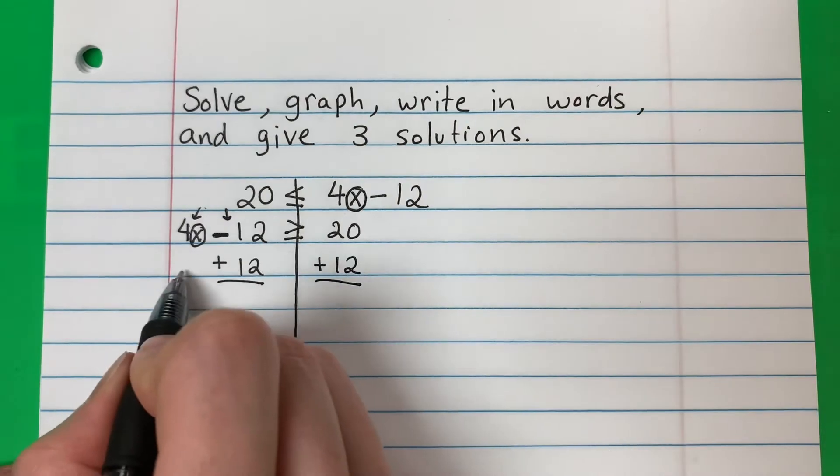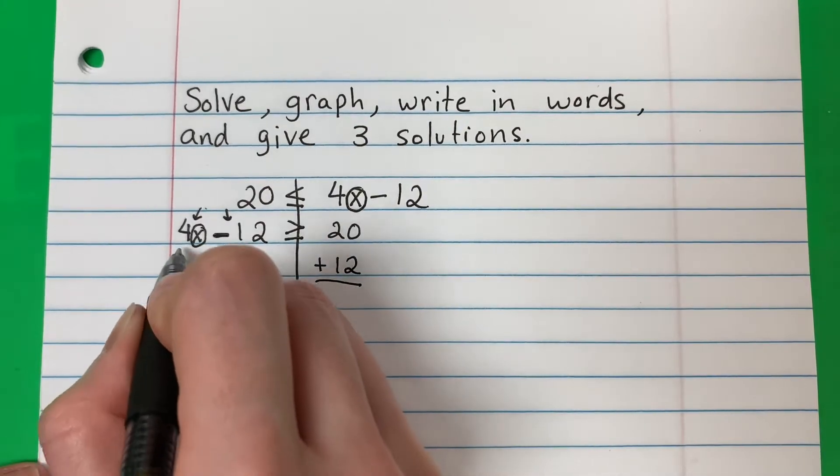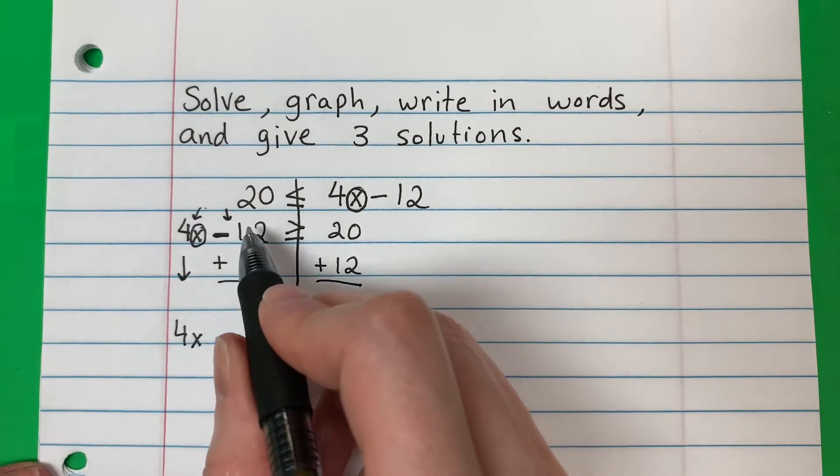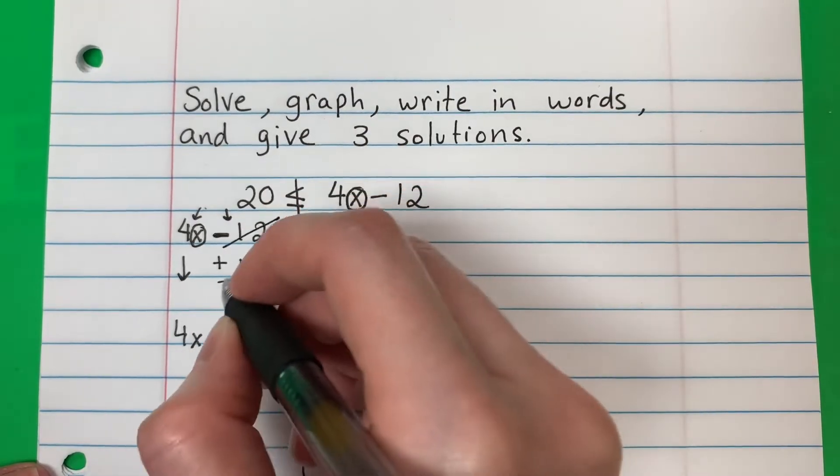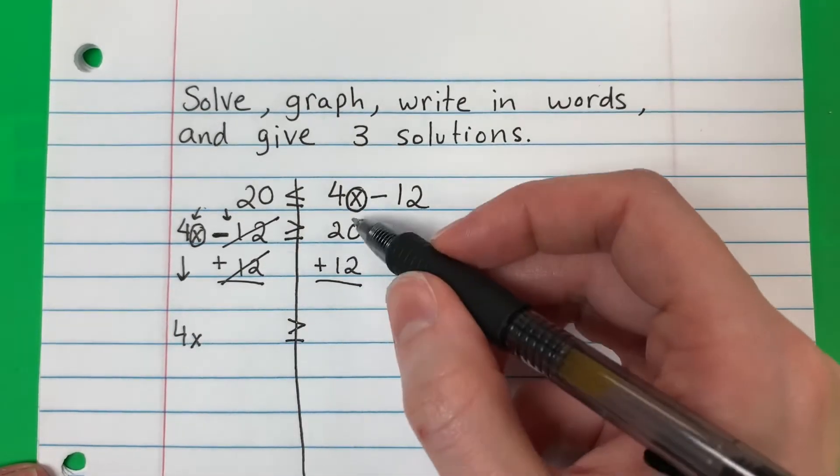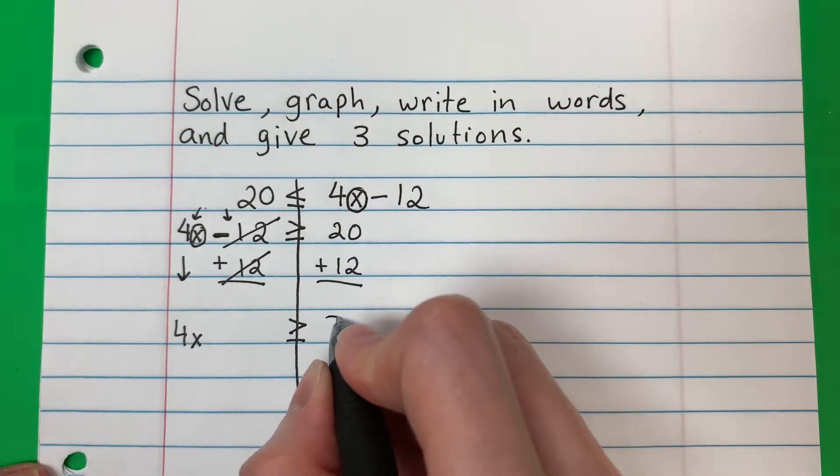Okay, here there's nothing, so I will copy down 4X. Negative 12 plus 12 is 0. Cancel, 0. Copy greater than or equal. 20 plus 12, that is 32.